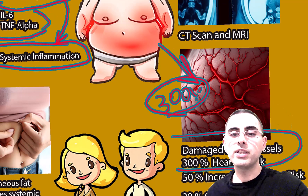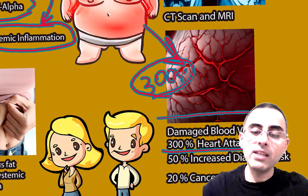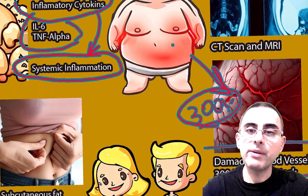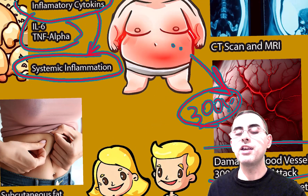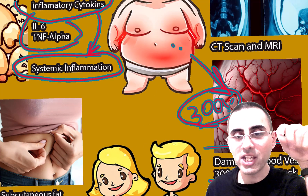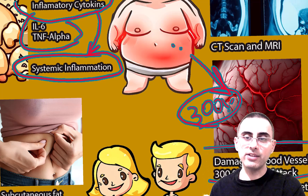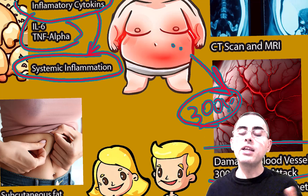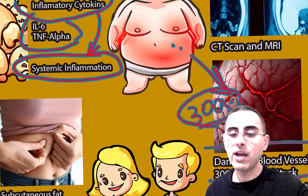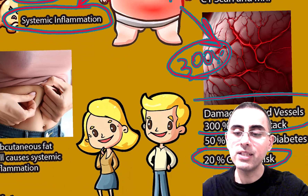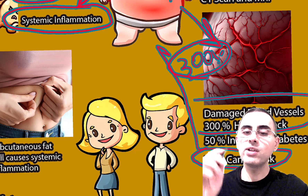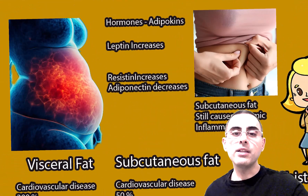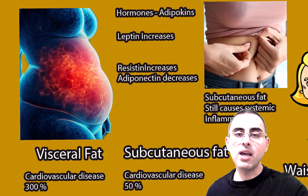The damaged blood vessels caused by this chronic inflammation result in a 300% increased risk of cardiovascular disease. There is also a 20% increased risk of cancer. Chronic inflammation damages cell linings, and when cells are damaged there is a high risk of mutations, and mutations can cause cancer. Furthermore, low-grade inflammation creates a favorable environment for cancer growth, which is why excessive visceral fat raises the risk of any kind of cancer by 20%.